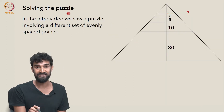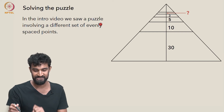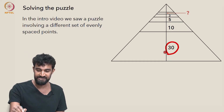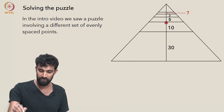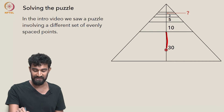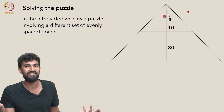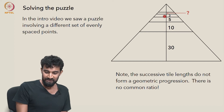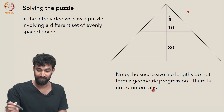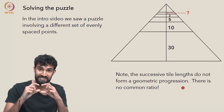I also want to look again at the puzzle from the intro video, where we saw a very different — actually a very similar — set of evenly spaced points from a different perspective. We measured out the heights of the first few tiles: the bottom tile has a height of 30, the next has a height of 10, the next 5, the next 3. The question was: what is the next one, and can we find any pattern? The surprising thing is that these successive lengths don't form a geometric series — there's no common ratio between them.